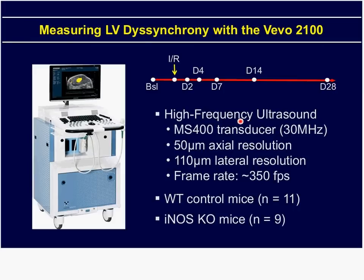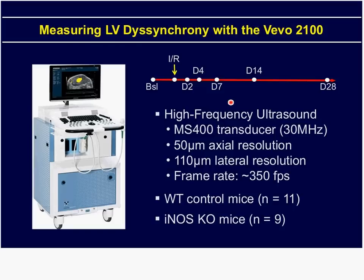The final topic I'd like to touch upon is measuring LV dyssynchrony with the VIVO 2100. In this study, we've used 11 control mice and 9 iNOS knockout mice. The study design timeline includes baseline imaging, ischemia-reperfusion injury at day 0, and then imaging at day 2, day 4, day 7, day 14, and day 28. This is our preferred timeline for catching as much as we can of the progression of LV remodeling.